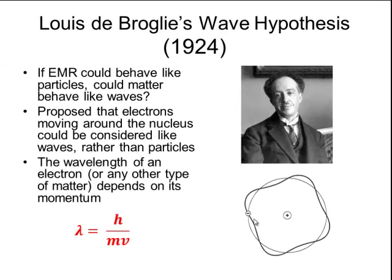He further hypothesized that the wavelength of an electron, or any other type of matter, depends on its momentum. He was able to support his hypothesis mathematically using this equation. Momentum is calculated by multiplying mass times velocity of any particle of matter. Remember that h is Planck's constant, and lambda is the wavelength of a wave.